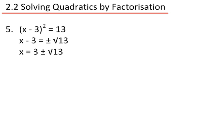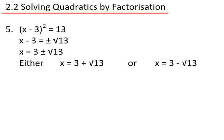Rearranging this, x equals 3 plus or minus the square root of 13. So now we have two answers, a positive or a negative. So x equals 3 plus root 13, or x equals 3 minus root 13. Perfect.